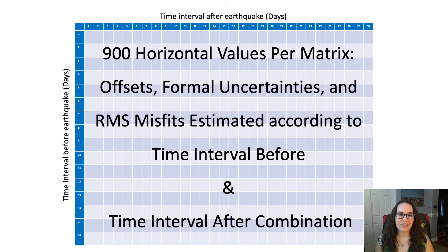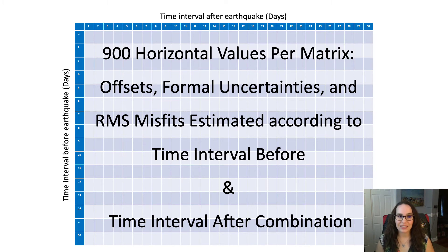For a single station affected by a single earthquake greater than or equal to magnitude 5.5, we calculate 900 horizontal values per matrix for offsets and formal uncertainties.